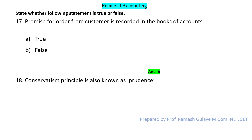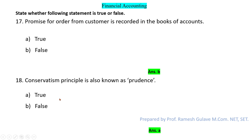The next true or false question says: conservatism principle is also known as prudence. As already mentioned, conservatism and prudence are both words used interchangeably — the conservatism principle and prudence principle are one and the same. Multiple questions are asked on this because it is a very important principle in accounting. So this statement is true.